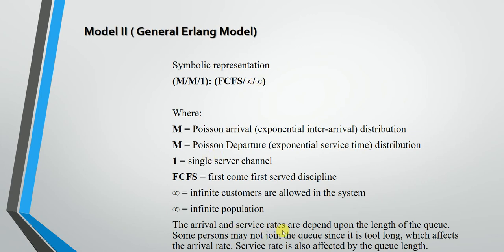In Model 2, the arrival and service rates depend upon the length of the queue. The queue length may vary — some persons may not join the queue because it is too long, which affects the arrival rate. The service rate is also affected by the queue length, as customers who see a very long queue may not join, impacting both arrival and service rates.